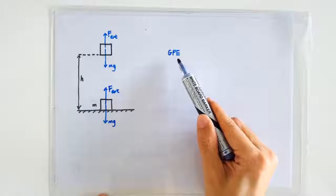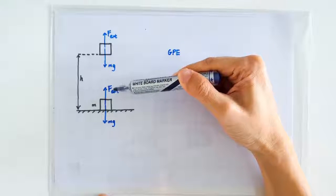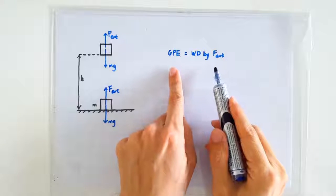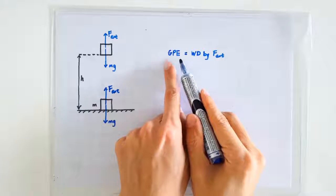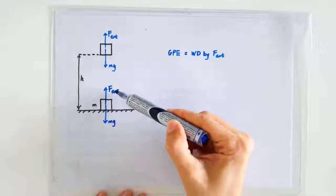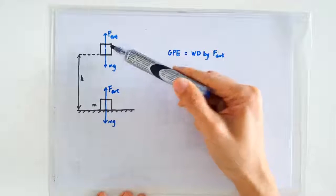So the GPE ought to be equal to the amount of work that must be done by the external force. So that's our strategy. We are going to figure out a sensible formula for GPE by figuring out what is the amount of work that the external force must do to move this mass from here to here.